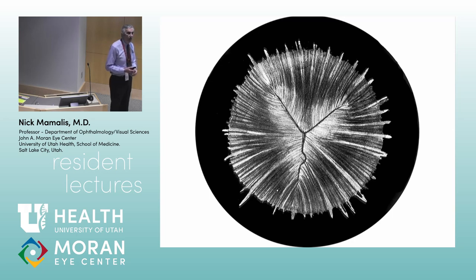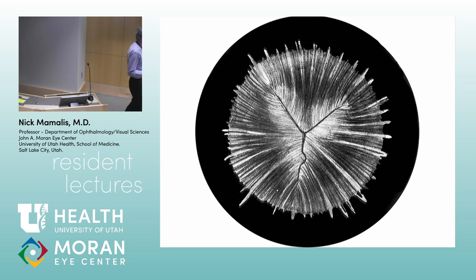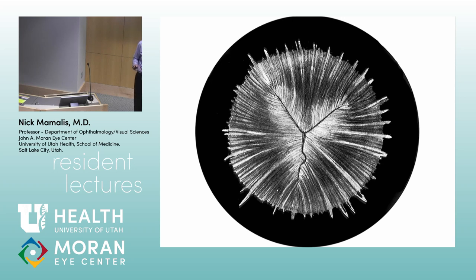Ariana, what are we seeing here? We're looking at the sutures where all these fibers come together — they form the letter Y. Because it's not a perfect sphere but more oval, those fibers as they come around form a Y instead of meeting at a single point. You've got a Y at the front of the nucleus and an upside-down Y at the back. Your mission today: find the Y sutures on the slit lamp — they're there on everybody.